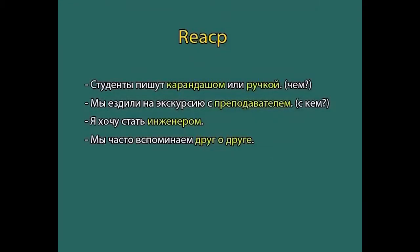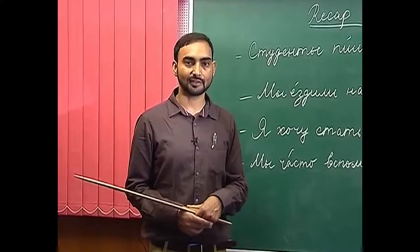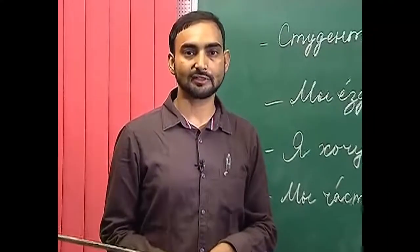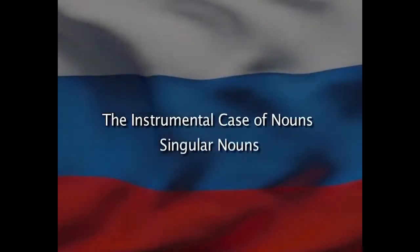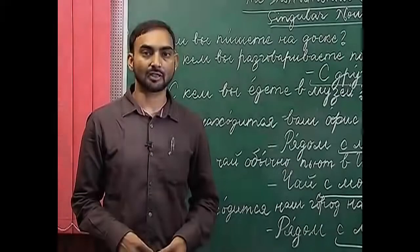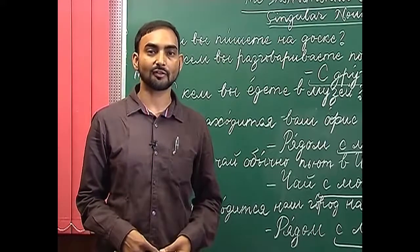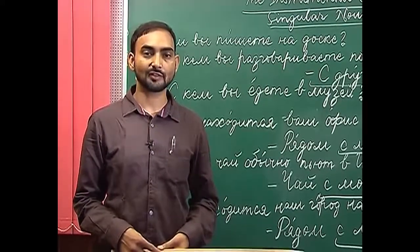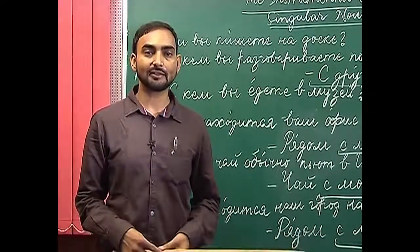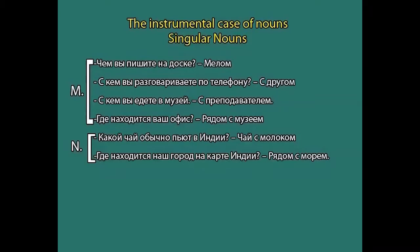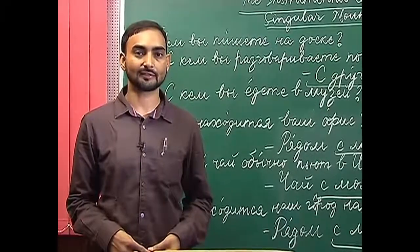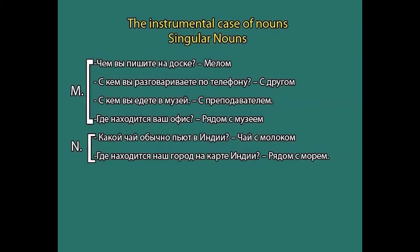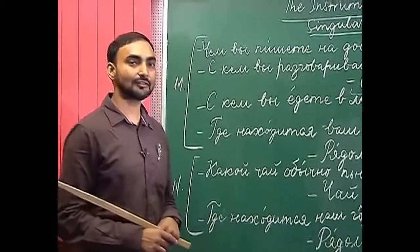So this was the recap of the previous lesson. Now we will look at the new topics we will be covering today. In the previous lesson we discussed the uses of the instrumental case of nouns in detail. Now we will learn the declension of singular nouns in the instrumental case — specifically, how do singular nouns decline? Let us first start with the masculine and neuter nouns.